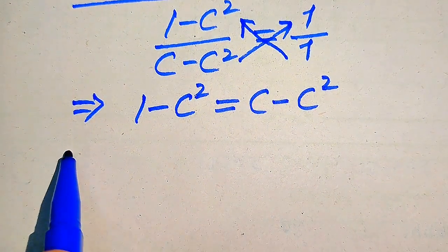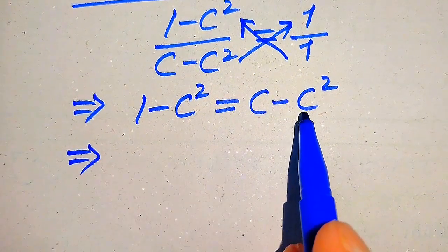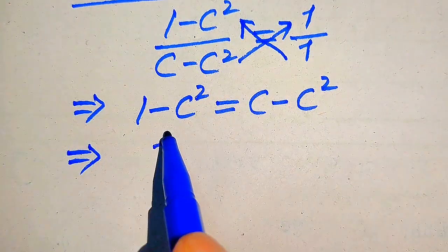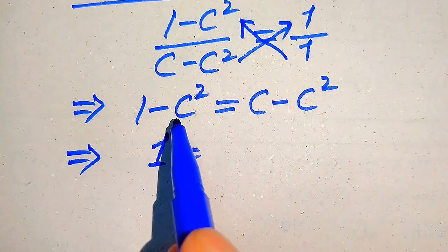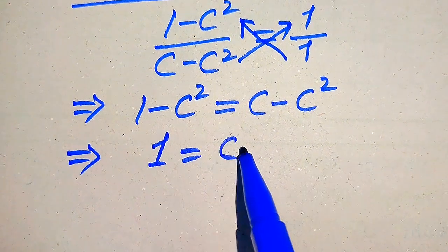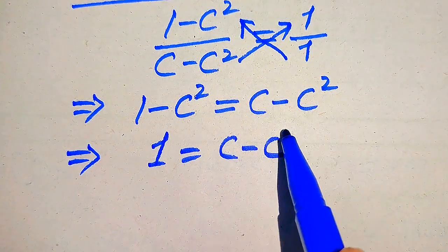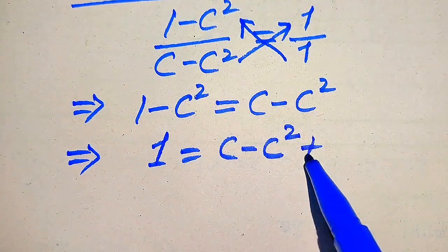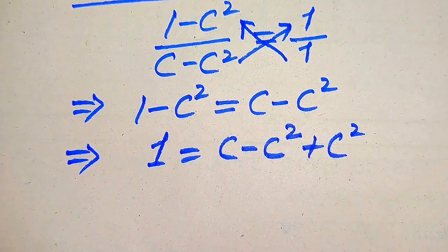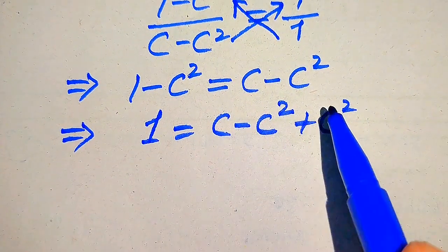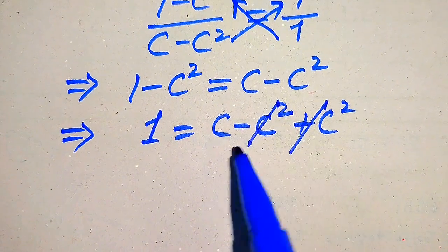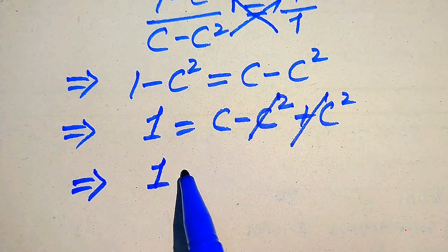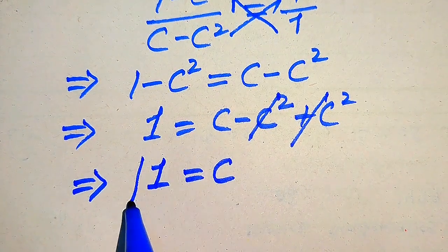In the next step we move minus C square to the right hand side. This is a negative term; when we move it to the right hand side it becomes plus C square. Now the positive and negative C square terms cancel out, and we easily get the value of C is equals to 1.